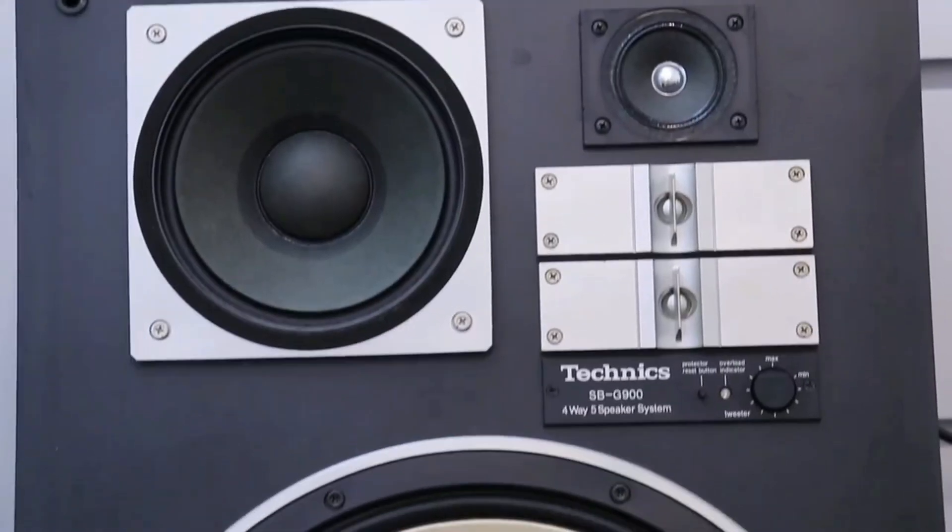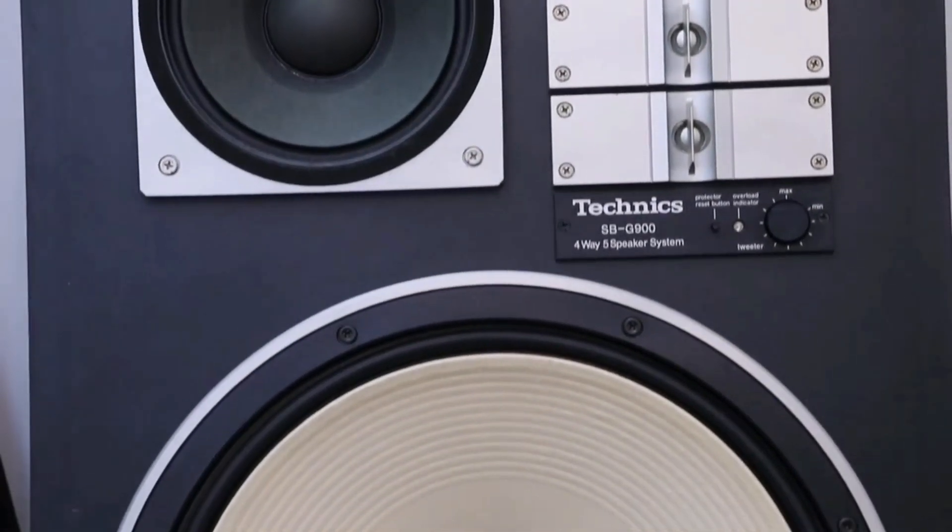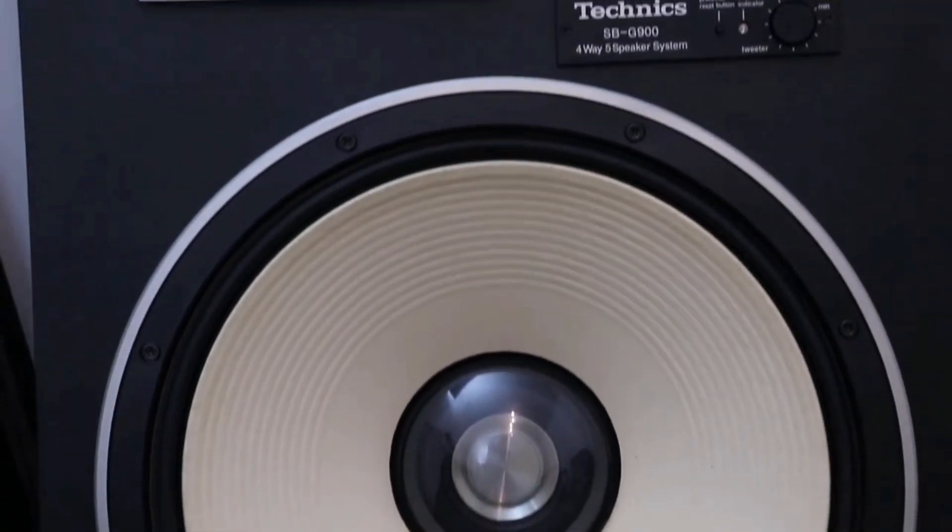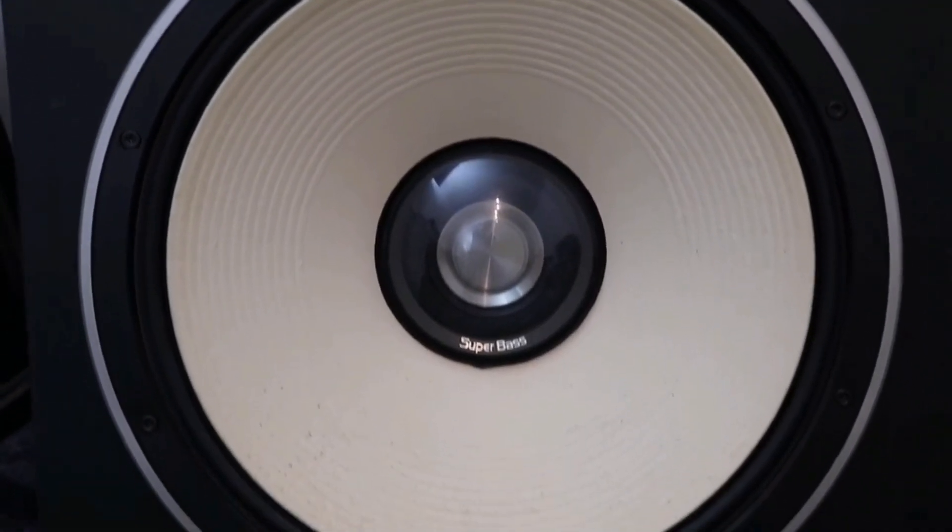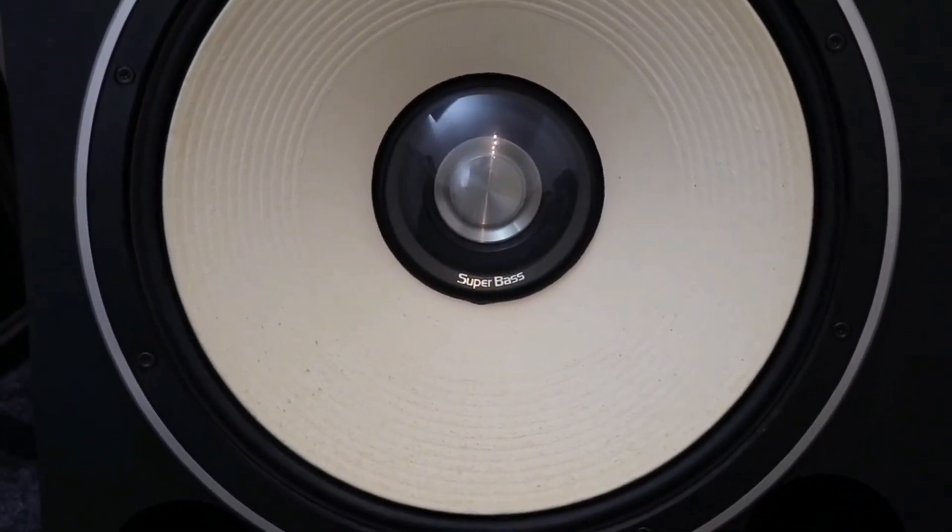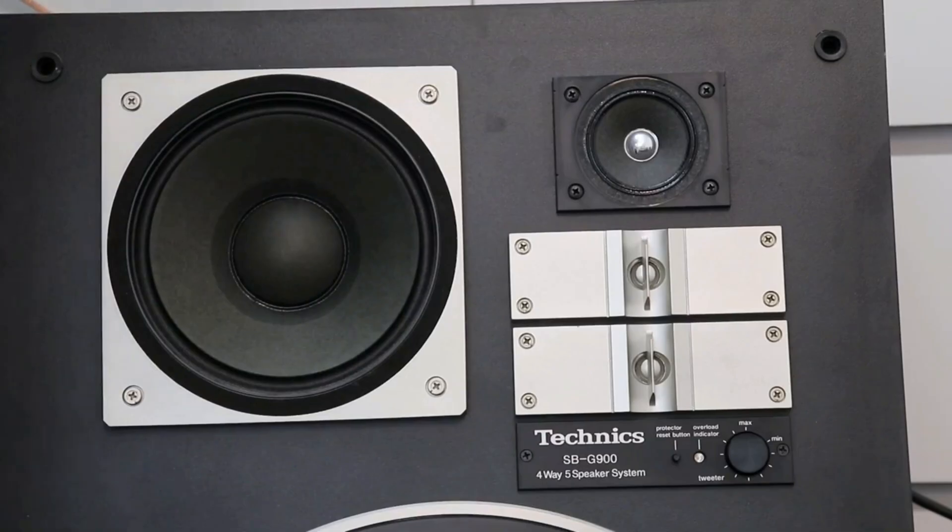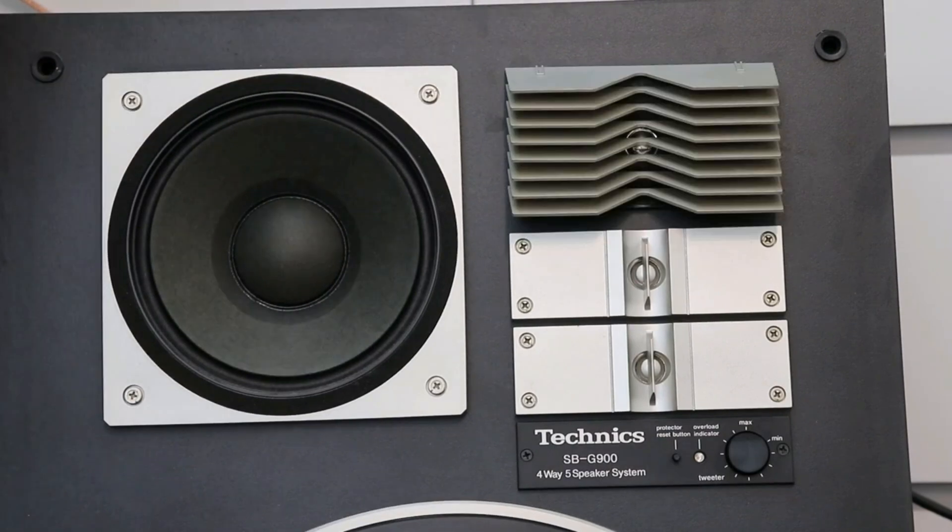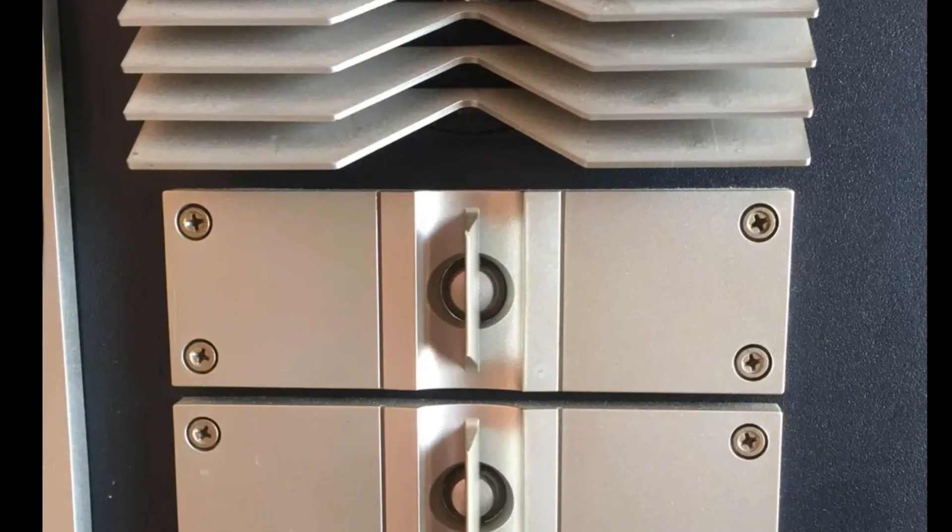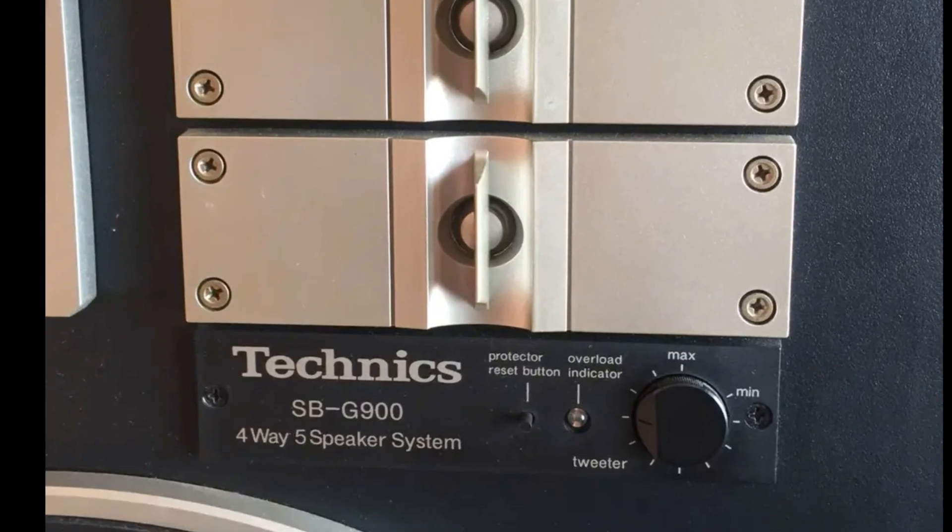You can see the size of this speaker is 15 to 16 inches, which is too big for a small room. The Technics SB-G900 was first made in 1981. Now the Technics SB-G900 is rarely found, so even if there is, the price is between $200 to $400 per pair.